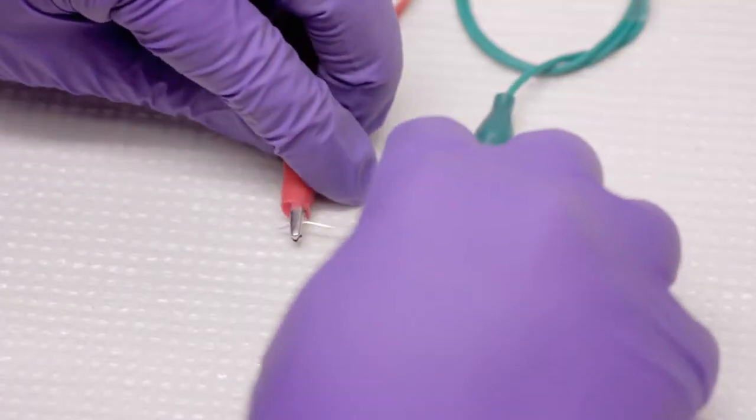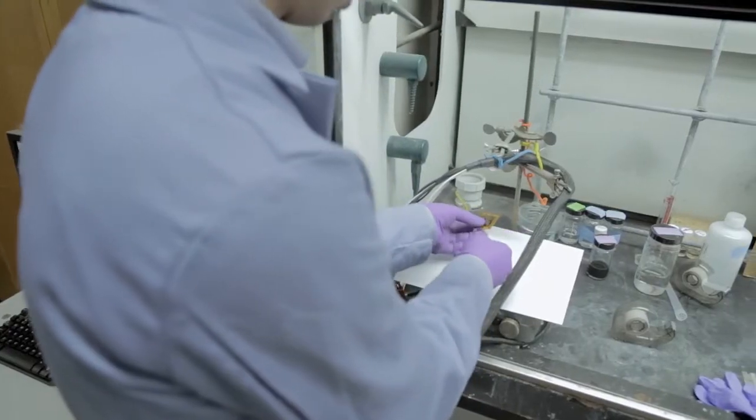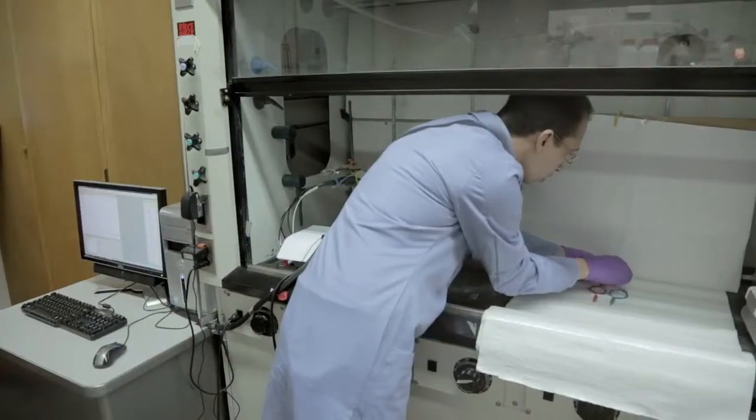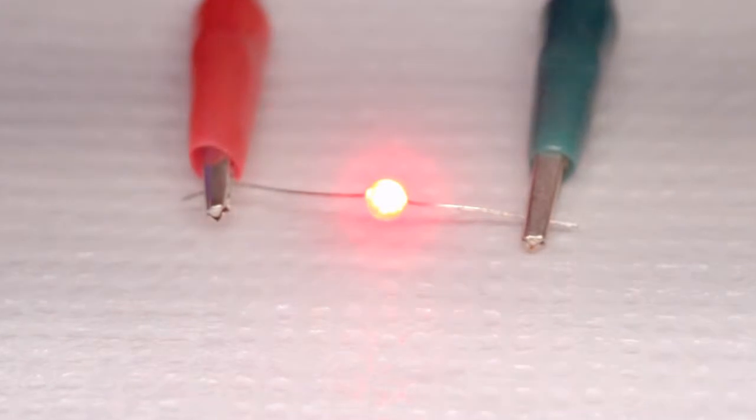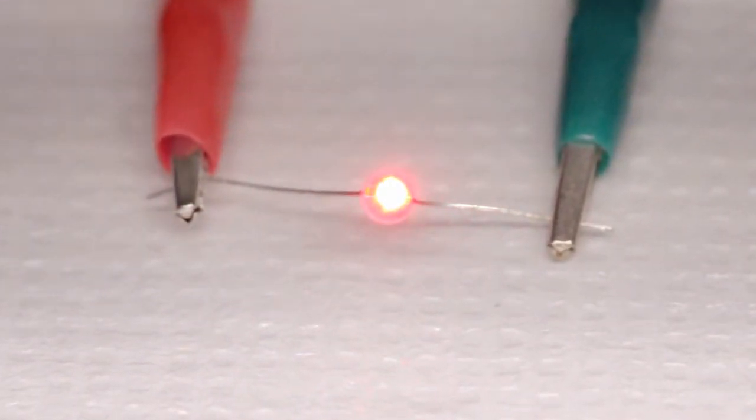And he just took a light bulb and he just turned it on with this little piece of graphene. But the amazing thing is it doesn't stop working. After charging for two or three seconds, he ran this light for over five minutes.